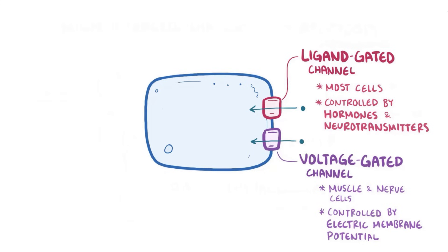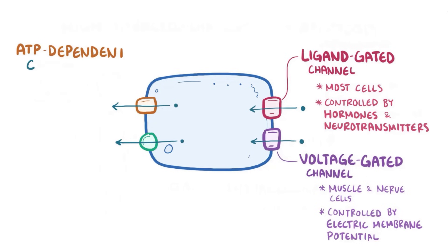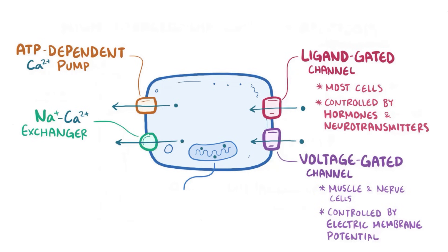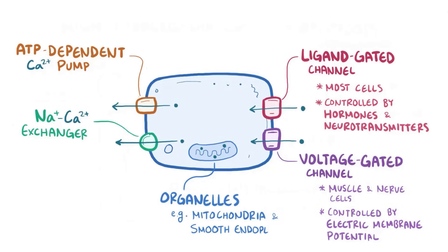So calcium flows in through these channels, and to prevent calcium levels from getting too high, cells kick excess calcium right back out with ATP-dependent calcium pumps as well as sodium-calcium exchangers. In addition, most of the intracellular calcium is stored within organelles like the mitochondria and the smooth endoplasmic reticulum, and is released selectively just when it's needed.